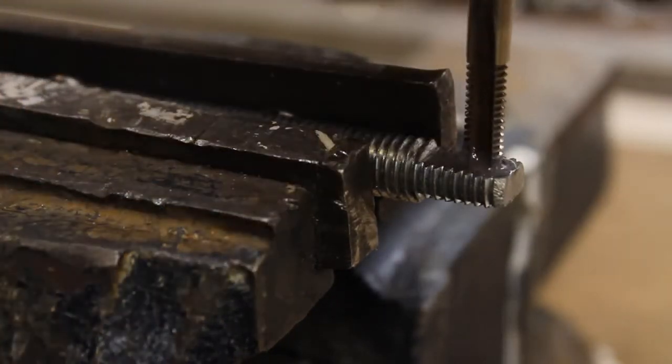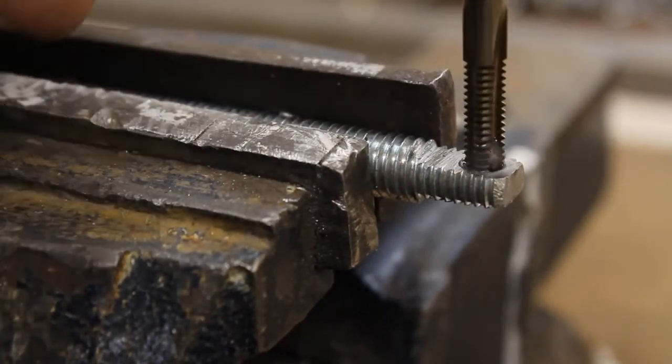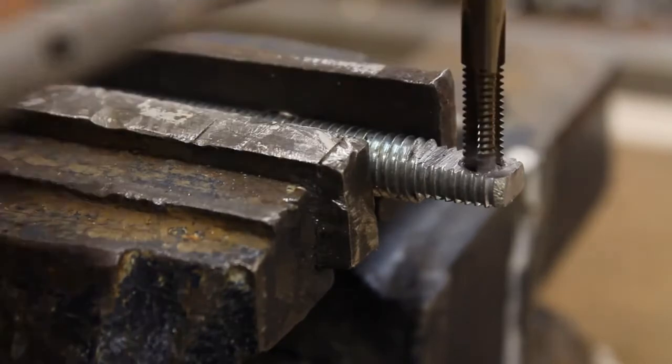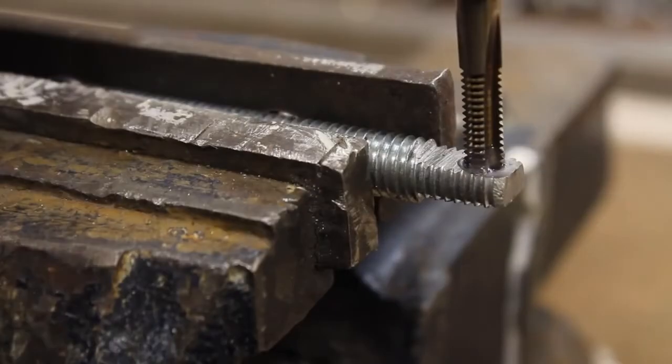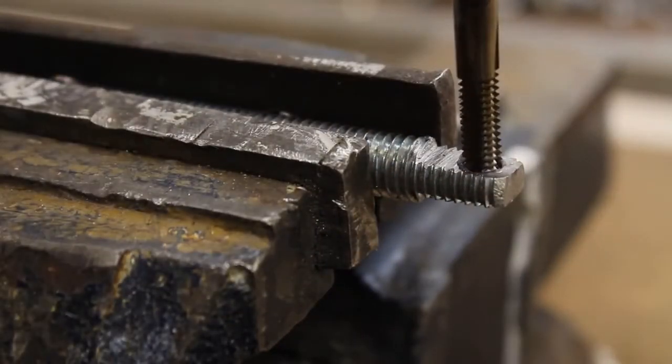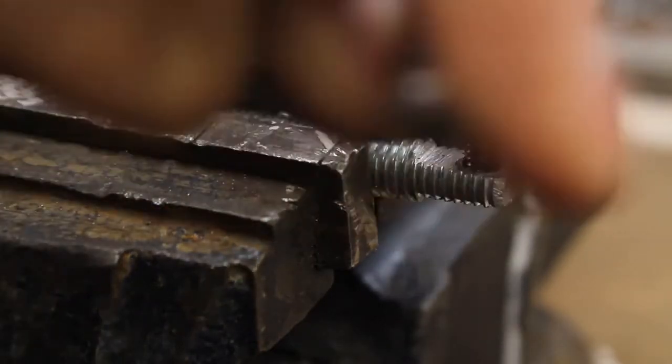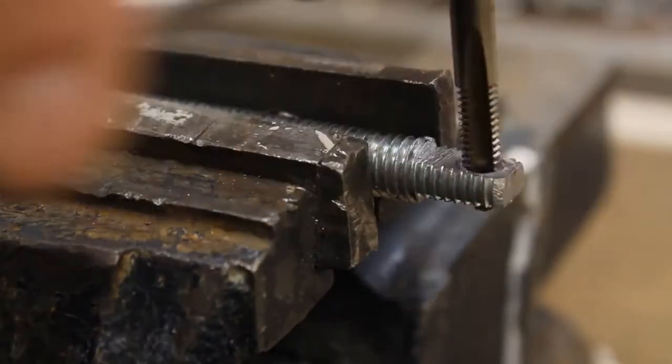The first cut is done with the bottoming tab, usually marked with one ring at the shaft. Put some lubricant on the tool. Assure that the tab is aligned perpendicularly. After turning the tab clockwise for some degrees, turn it counterclockwise to break the chip formed through the cutting process, thus to prevent the tool from jamming.